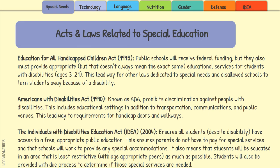The first topic covers laws and acts related to special education and giving rights to those with special needs. We'll talk about three main ones that are almost the same law and have just evolved over the years. We start back in 1975 with the Education for All Handicapped Children Act.